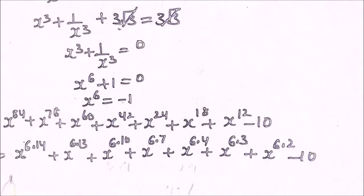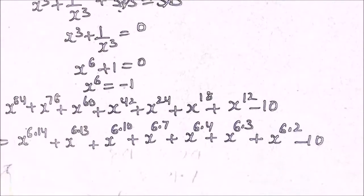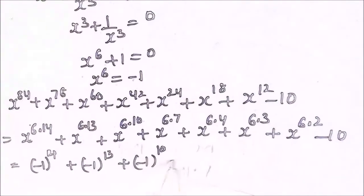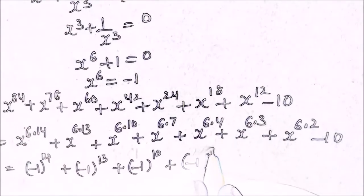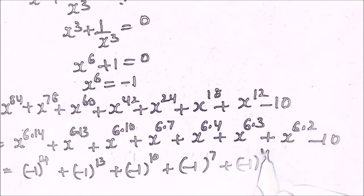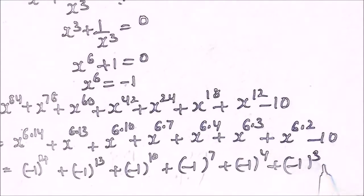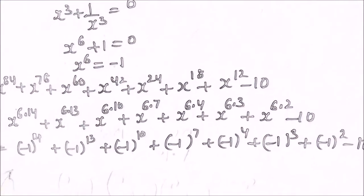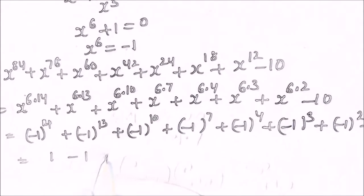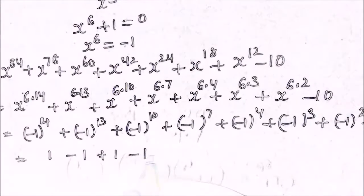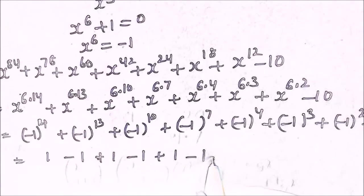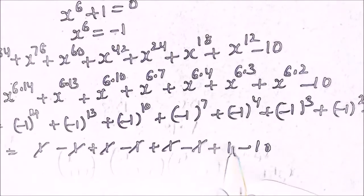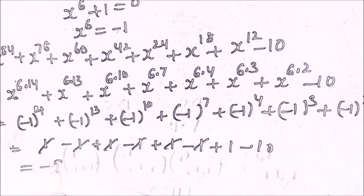We know that x raised to the power 6 is minus 1, so we substitute: minus 1 raised to the power 14, minus 1 raised to the power 13, minus 1 raised to the power 10, minus 1 raised to the power 7, minus 1 raised to the power 4, minus 1 raised to the power 3, minus 1 raised to the power 2, minus 10. If the power is an even number this reduces to 1; odd powers give minus 1. So we get: 1, minus 1, 1, minus 1, 1, minus 1, 1, minus 10. The pairs cancel and we are left with 1 minus 10, so the answer is minus 9.